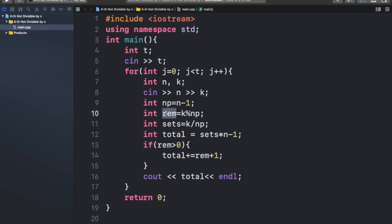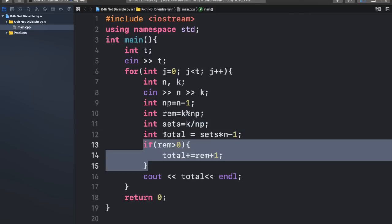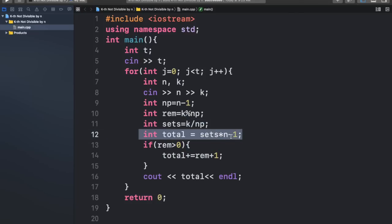We have our integer steps, or in this case, I just clearly wrote it out as the integer remainder, which is k mod n prime. Here is the integer sets, which is basically just the number of sets as we discovered previously. It'll just be k divided by n prime. So now we have this integer total. And what this basically is, is we see sets times n in the beginning. So this is obviously a multiple of n.